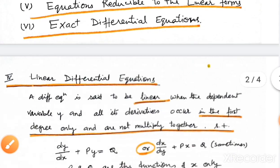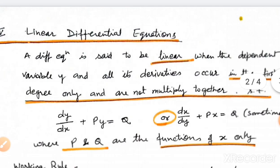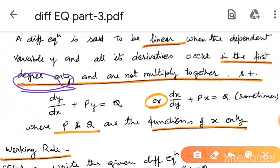A linear differential equation is when the independent variable y and all its derivatives occur in the first degree only, and are not multiplying together. The derivative and dependent variable must all be in linear form.